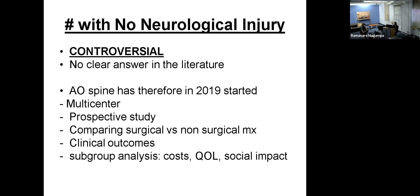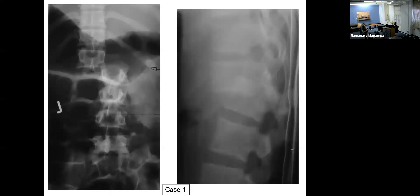The most difficult entity is a patient with a thoracolumbar fracture and no neurological injury — do we need to fix? There are no clear answers. The AO has started a prospective multi-center Level 1 study comparing surgical versus non-surgical clinical outcomes for thoracolumbar fractures. This is currently ongoing and hopefully will give us better answers.